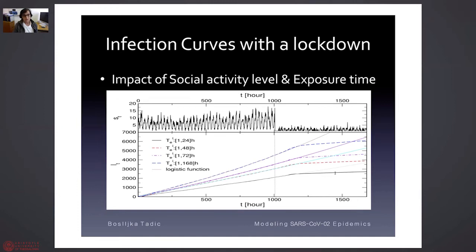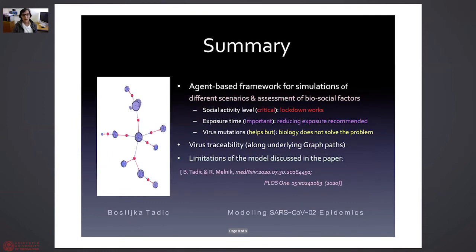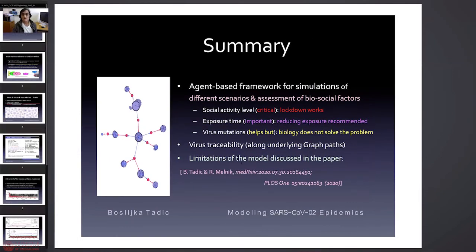In this framework we can model different scenarios. For instance we have very normal social dynamics for six weeks and then lockdown with much less participation and you see that the infection curves increase and then they level up due to lockdown but not immediately, it's something like 15 days delay. And different curves are for the same social participation but different exposition time of individuals. So in this framework we can simulate with obvious limitations which are discussed in our paper and assess importance of different biological and social factors. For instance we can say that social activity level is very critical, that's why lockdown could work for a while. Exposition time is important, virus mutations can help but biology cannot solve the problem, that's up to us. More in this paper, thank you very much.